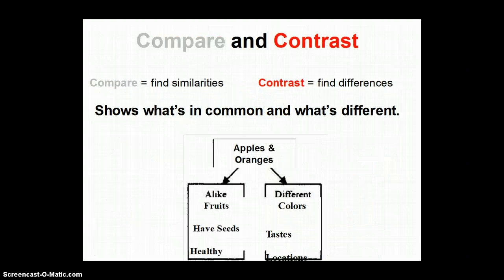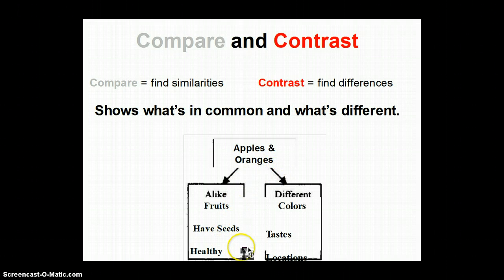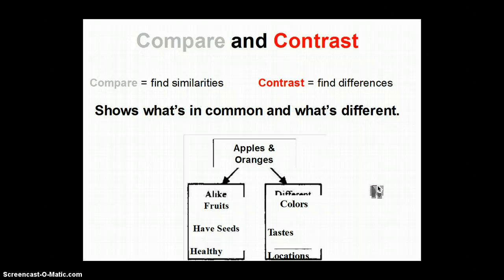The fifth and final text structure is compare and contrast. Compare means similarities; contrast means differences. If you're reading a compare-and-contrast text, they're showing what's the same and what's different. For example: apples and oranges — they're both fruits, both have seeds, both healthy (similarities); but different colors, different tastes, different locations (differences). You've all written compare-and-contrast papers, and you're going to write more this year.